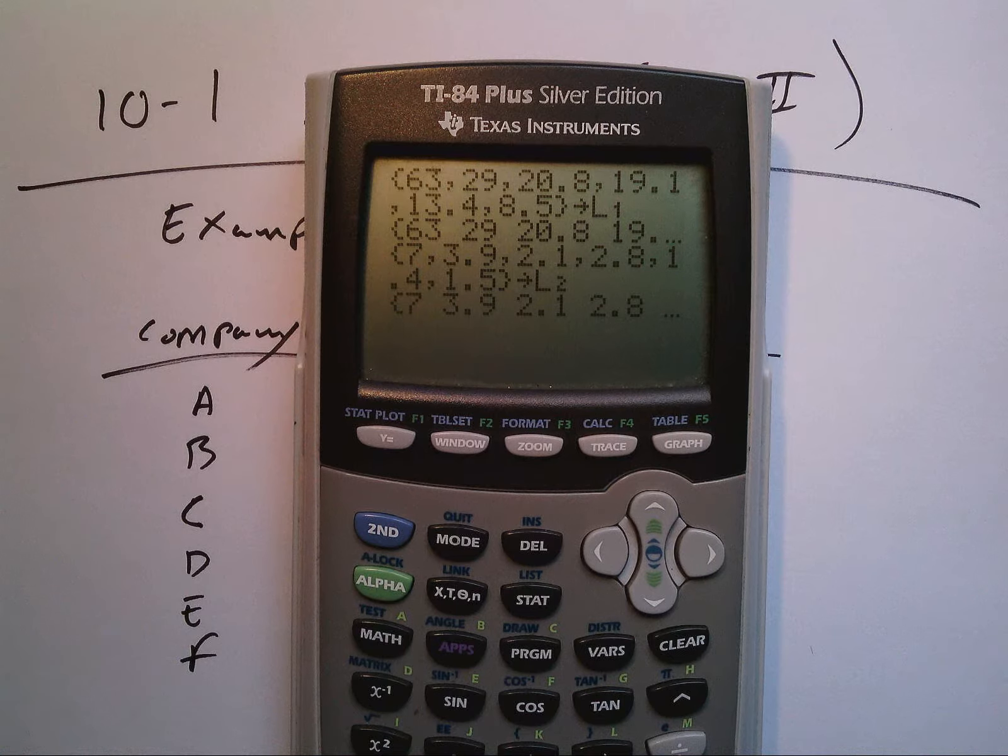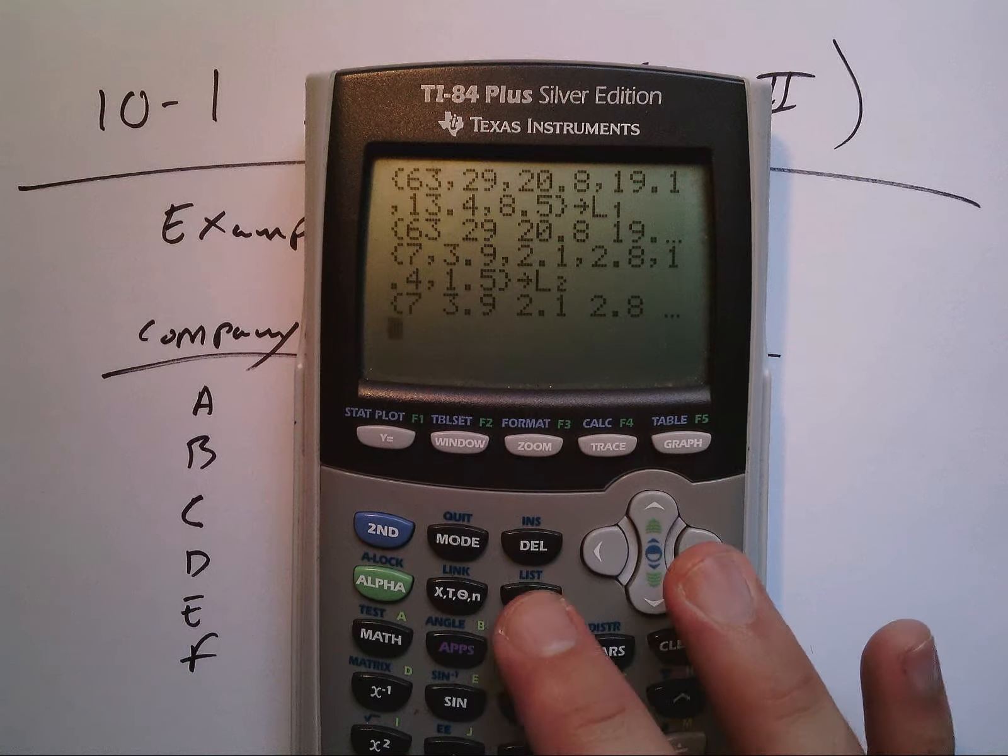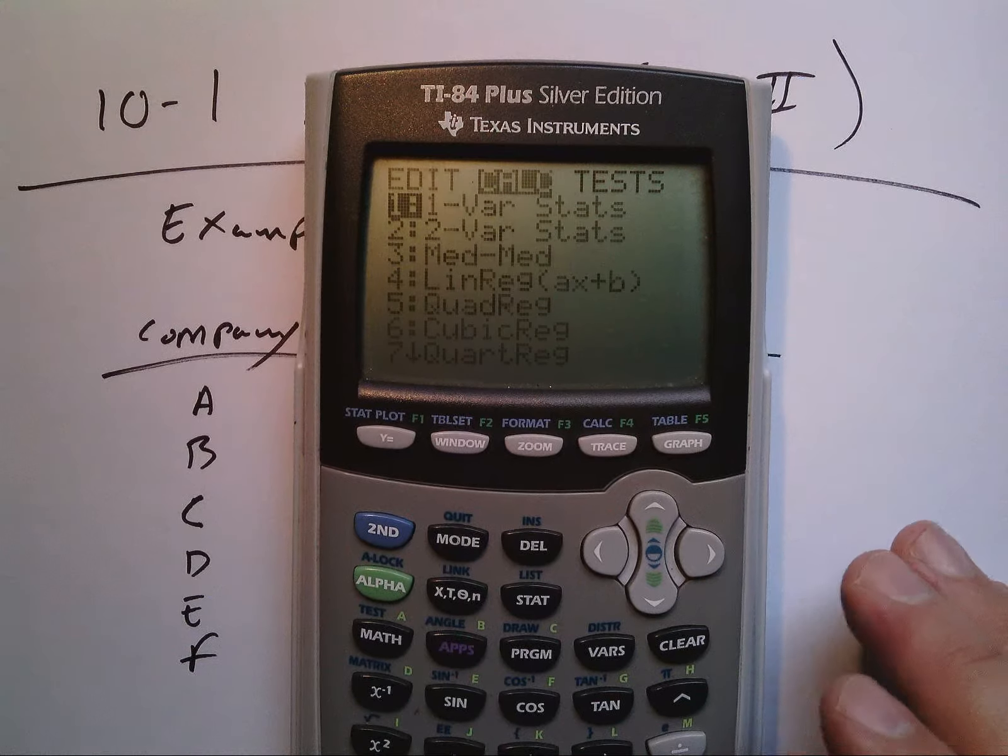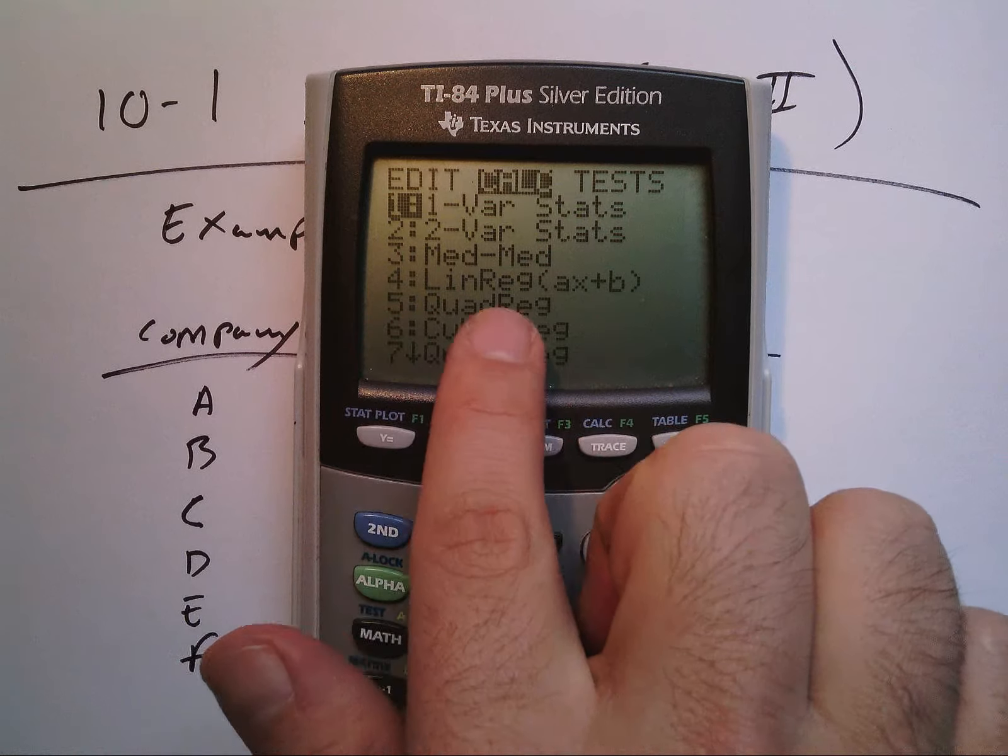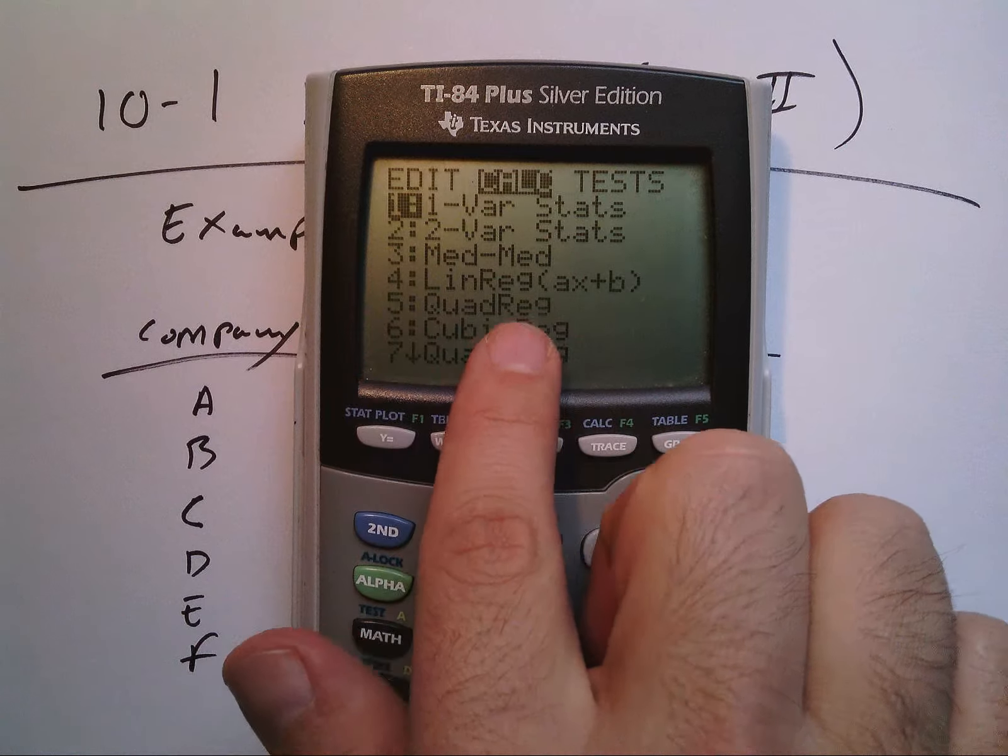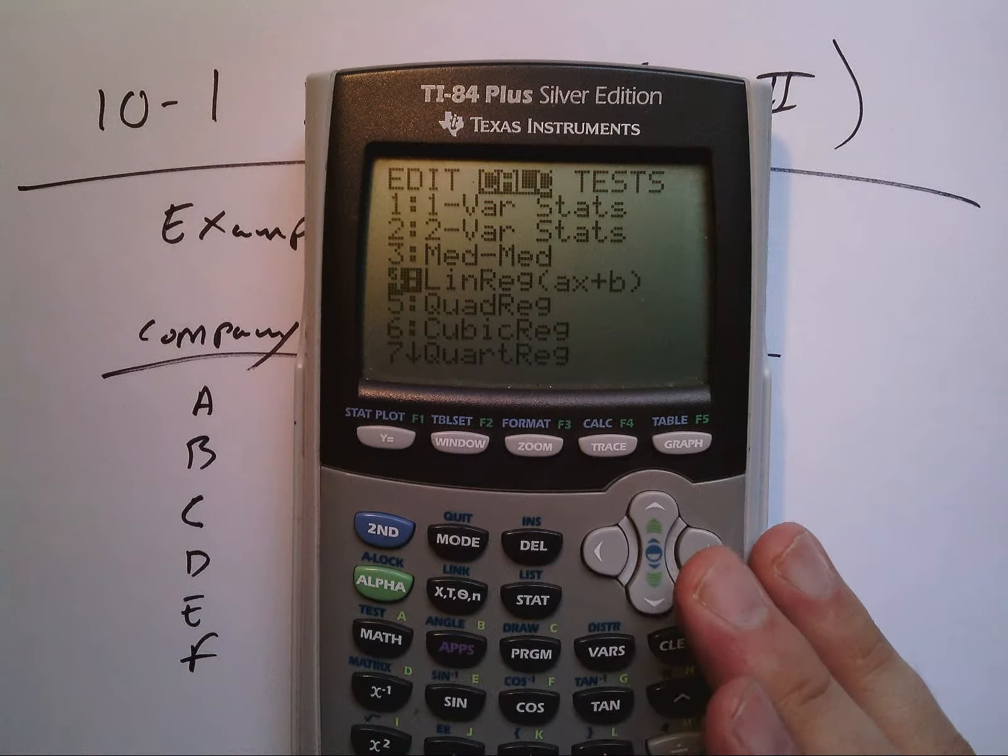In order to do that using the calculator—otherwise it's a really big formula—I'm going to go to stat calc. Do you see number 4 right here? LinReg. That's linear regression in the form ax plus b. We're going to use some of the other things in here later for 10.2 and 10.3.